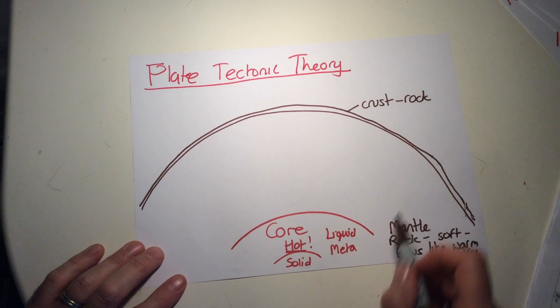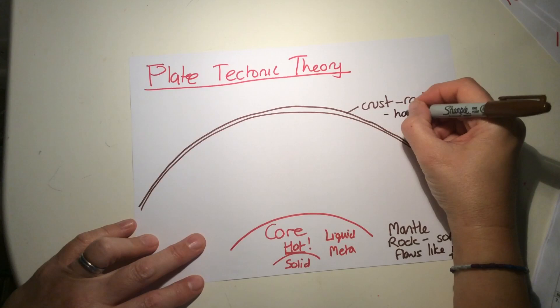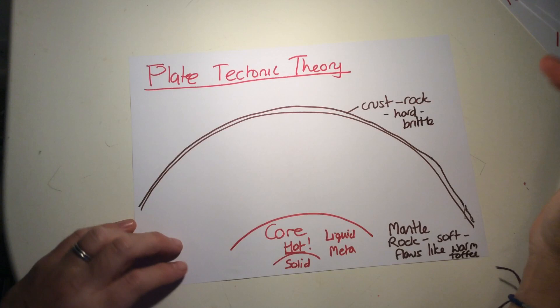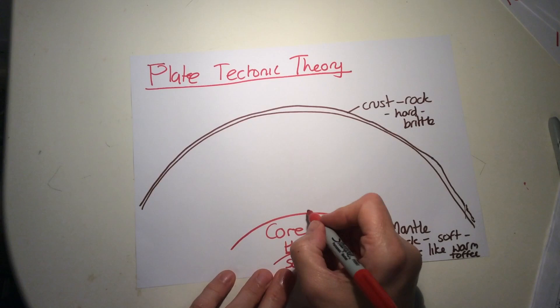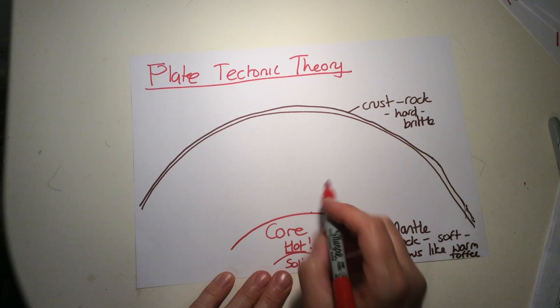So this great big layer here is made of flowing rock. The crust—the rock at the crust—is hard and it is brittle. On the outside there, the rock will snap and break. So let's explain why bits of this crust are moving in different directions.